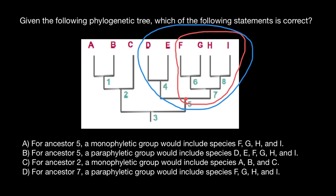Now statement B: for ancestor five, the paraphyletic group would include species D, E, F, G, H, and I. For ancestor five, that would include all the species — you already know we call such a group monophyletic. A paraphyletic group would be, for example, this group circled in red, which includes only some of the descendants but not all. Such a group we call paraphyletic.